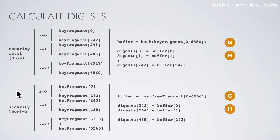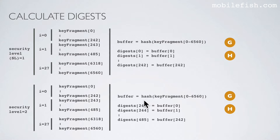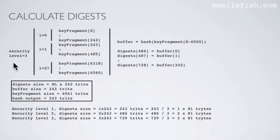Again starting with security levels 1, 2, and 3, each divided into 27 steps. You take the key fragment from the previous calculation (indices 0 to 6,560), hash the key fragment, and assign it to a buffer array of always 243 trits. You then assign the buffer array to the digest array. For security level 2, you do the same: take the key fragment, hash it, assign to a buffer, and assign to the digest array. The same applies for security level 3. Security level 1 gives a digest size of 1 × 81 trits; security level 2 gives 2 × 81 trits; and security level 3 gives 3 × 81 trits.